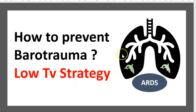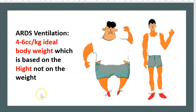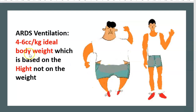Over-stretch of the good lung leads to barotrauma. How to prevent barotrauma: use a low tidal volume strategy — 4 to 6 cc per kilogram for ideal body weight, which is based on height, not on weight.